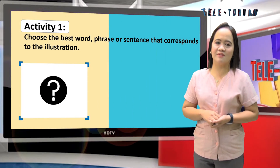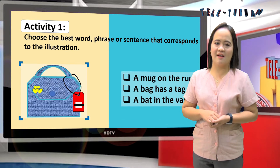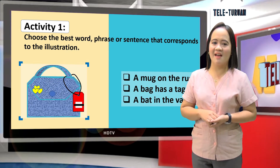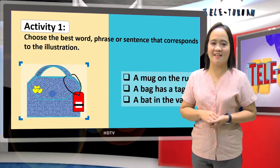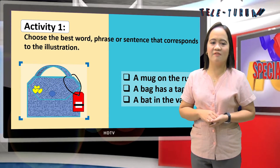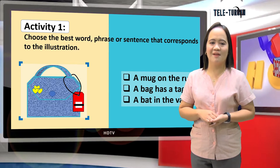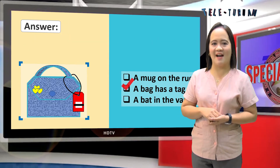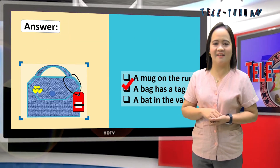Third illustration: a mug on the rug; a bug has a tug; a bat in the van. Very good — a bug has a tug.